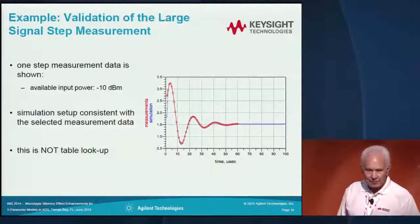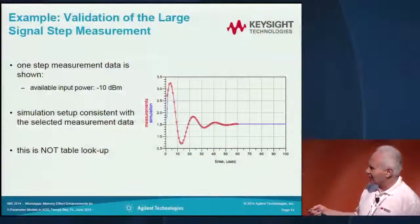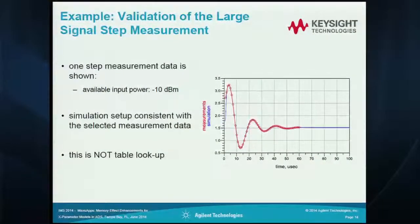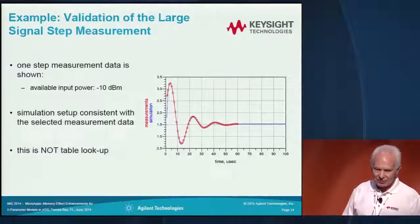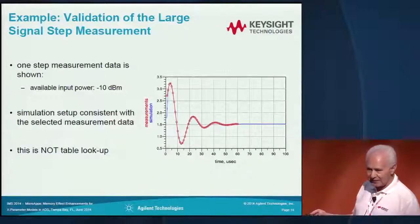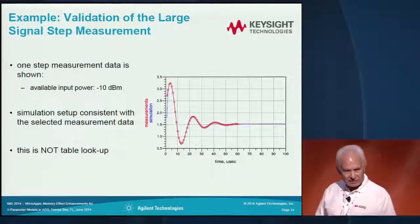The second example — this slide is not on the CD-ROM, so it's interesting to take a look. We selected one step from the measured data, built the model, and simulated under the same conditions. We get really excellent match to the step measurement data. Notably, if we used static X parameters for this simulation, the blue curve would be basically flat from zero to the end — that's really the difference that the model makes.